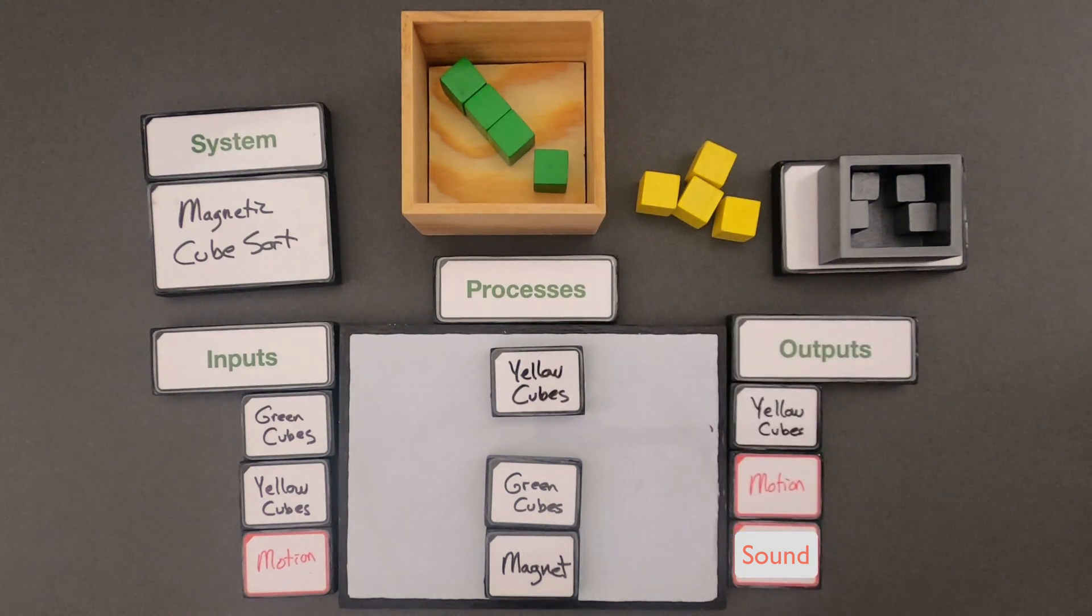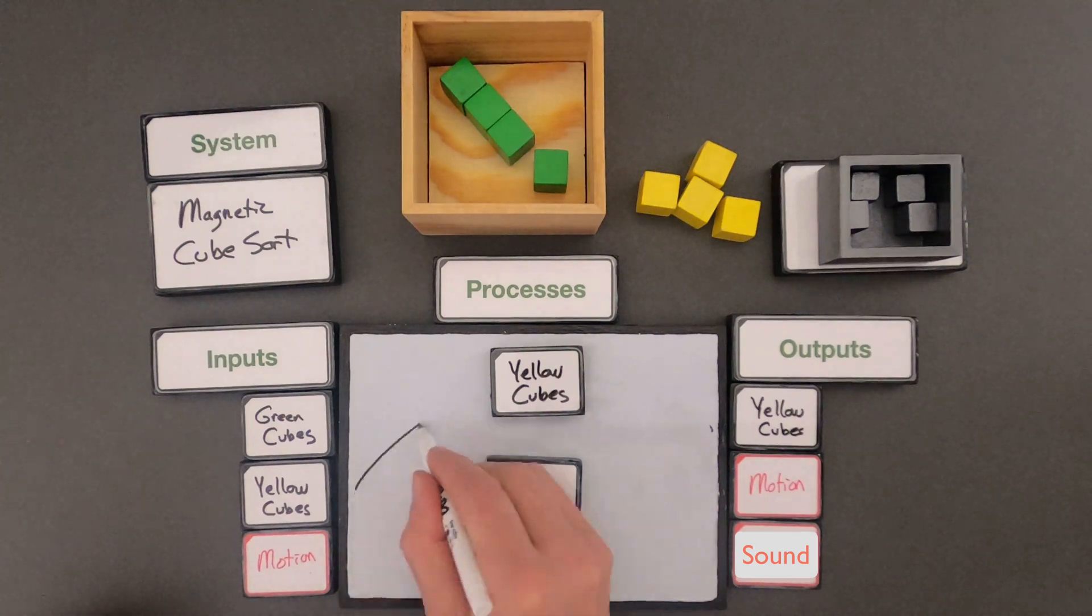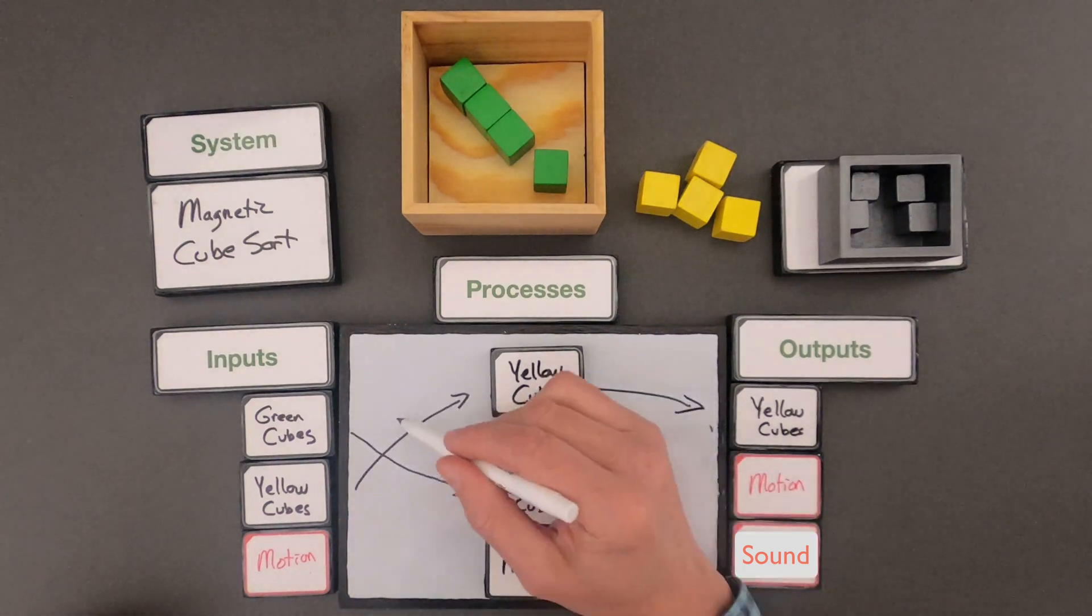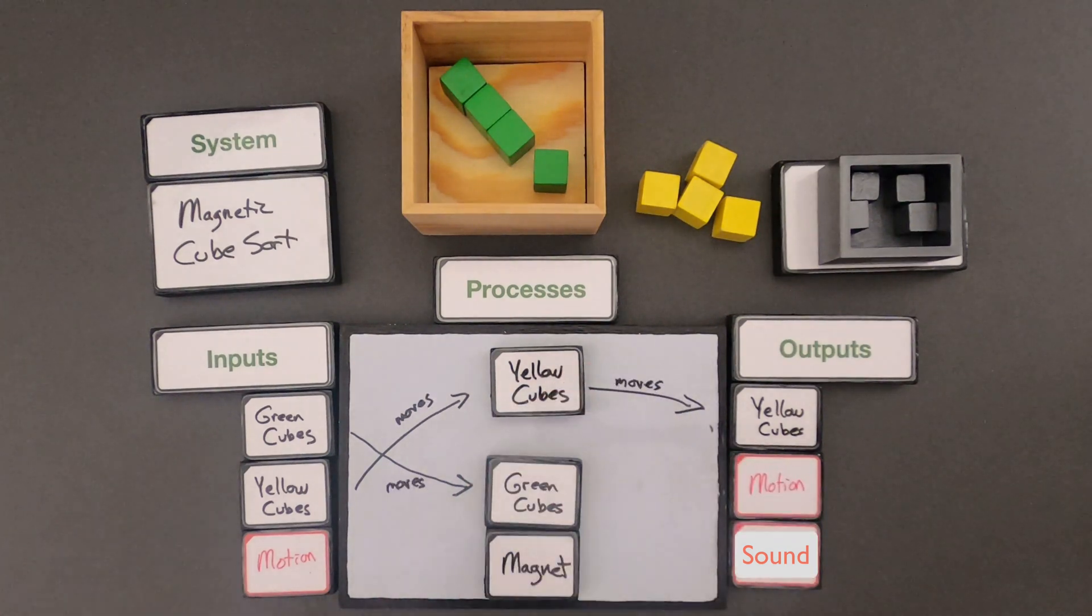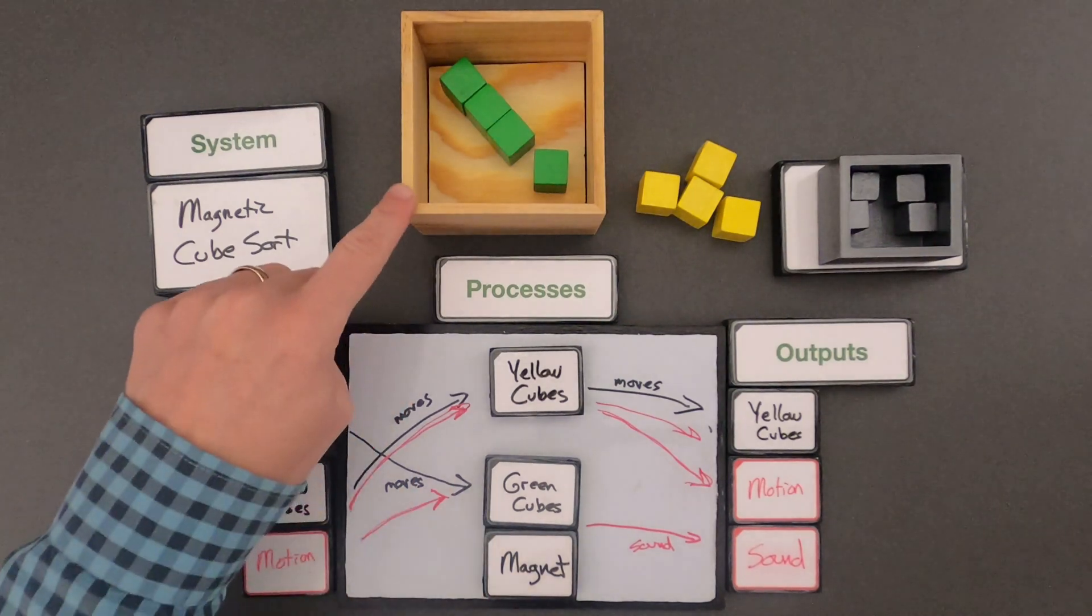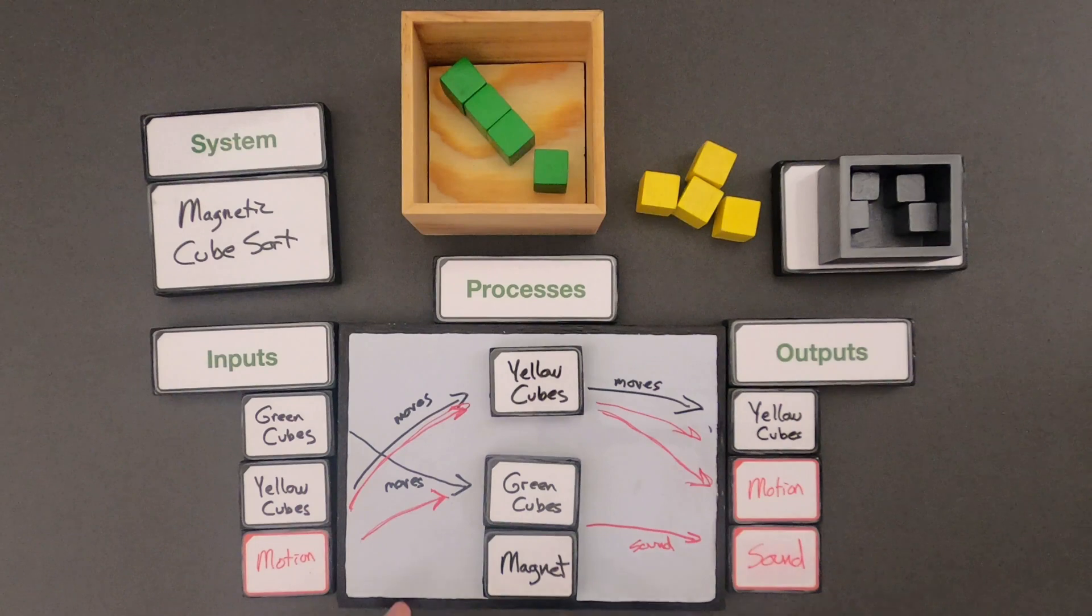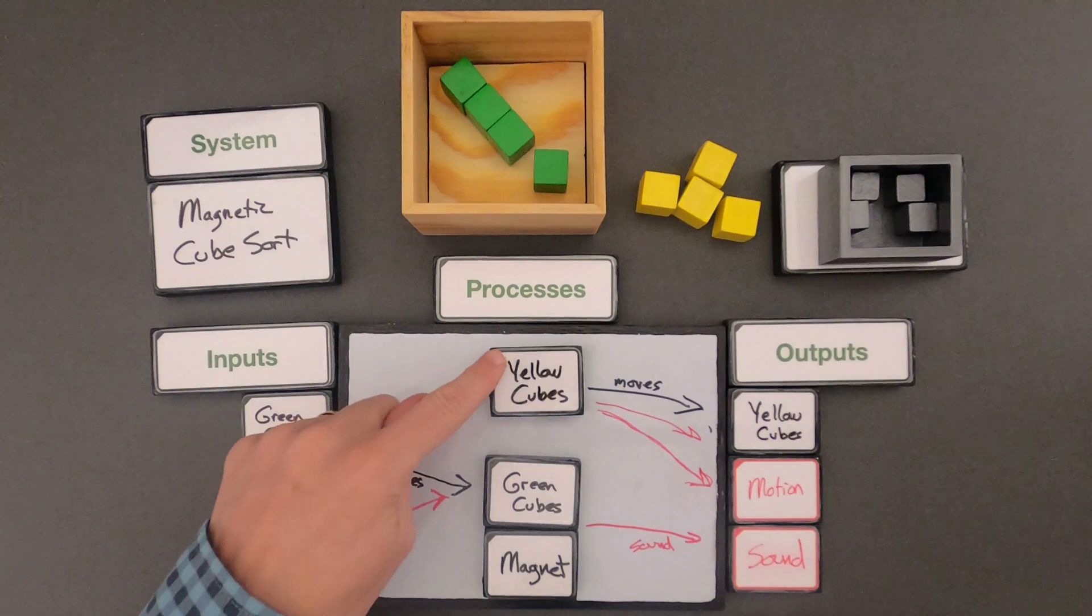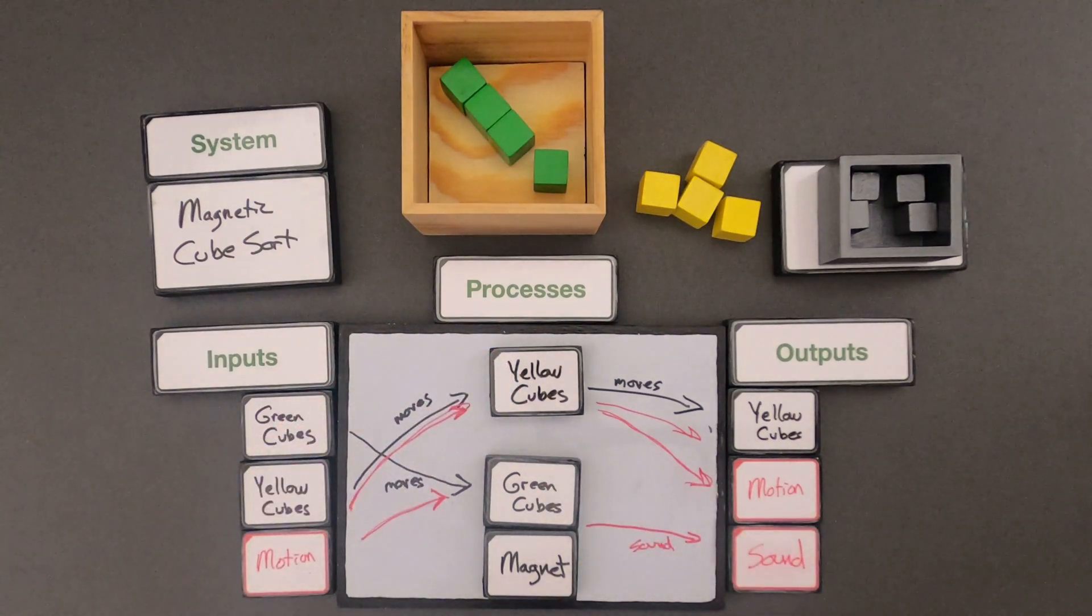Okay, so this is my interactions. I've got the green cubes going in and being attracted to the magnet. There's either a magnet in here or a magnet in the cubes. When they click together it makes a sound that leaves. Also we've got the yellow cubes moving in. So there's energy there and then the yellow cubes are moving out.